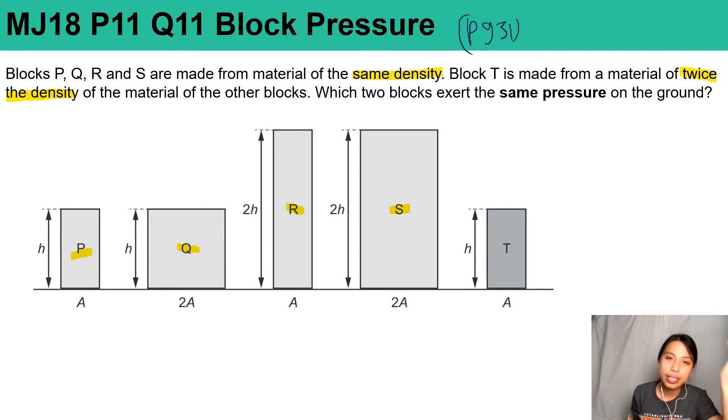Pressure, recap, is force over area. In this case you can pretty much say the force is weight. So all these blocks have a weight downwards which is mg. So we have pressure is mg over area, mass times gravity over area.